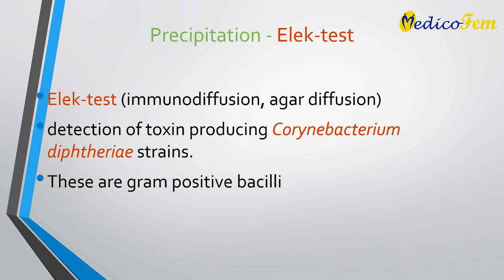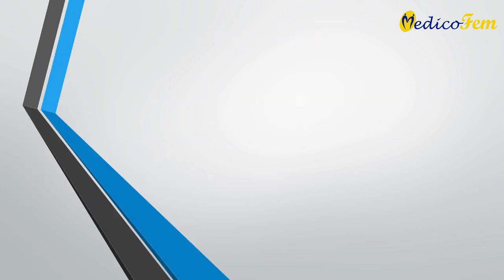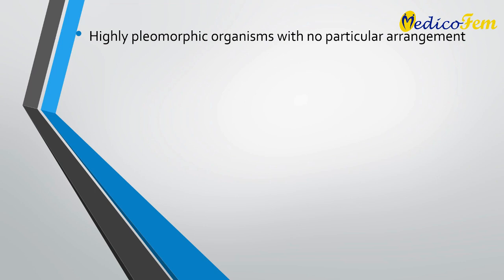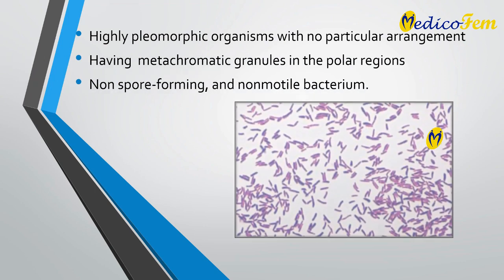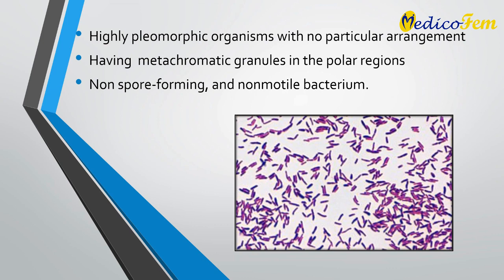Corynebacterium diphtheriae are gram-positive bacilli. They are highly pleomorphic organisms with no particular arrangement, having metachromatic granules at their polar regions. They are non-spore-forming and non-motile bacterium.